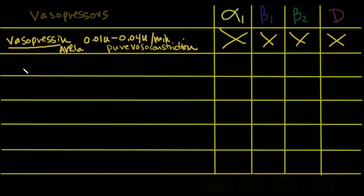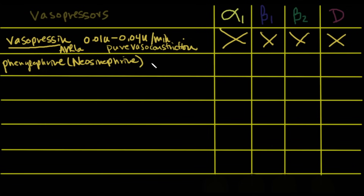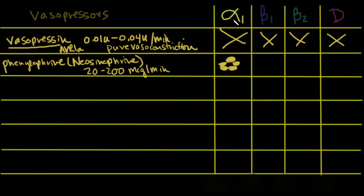The next vasopressor is phenylephrine, also called neosynephrine, dosed at 20 to 200 micrograms per minute. I'm starting with the most constrictive and moving toward the least constrictive. Phenylephrine is almost pure alpha-1 — I'll give it five dots to show how powerful its alpha-1 stimulation is. It highly stimulates the alpha-1 receptor and really doesn't do much else.